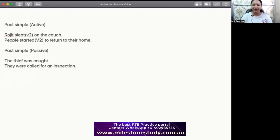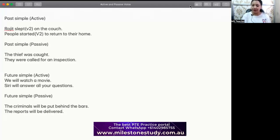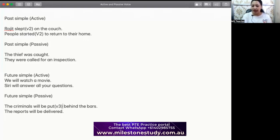Let's look at future tense. For future simple active voice, we have: 'We will watch a movie' — the activity will happen in the future. 'Siri will answer all your questions' — Siri, the subject, will actively answer. For passive, we use 'will be' plus V3: 'The criminal will be put behind the bars.' 'Put' is V3, 'will' is for future, and 'be' replaces is/am/was/were. 'The reports will be delivered' — delivered by somebody. The criminals are not going to go behind bars themselves; somebody will put them there.